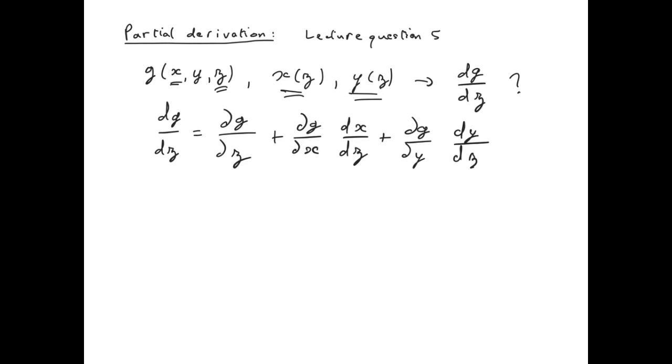So we take an example of that in lecture question 6 where we have g of x, y and t which is expressed as x squared y minus 3t. And we also say that y itself is a function of t, it's a cosine. And x is not a function of t.